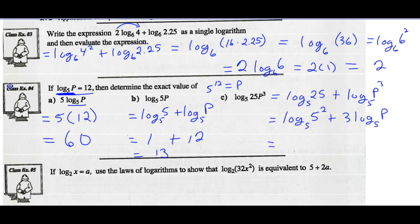And from previous work, I know the log of 5 squared base 5 is 2. And 3 times the log of P base 5. Again, the log of P base 5 is 12. So this is 3 times 12. So 2 add 36 gives us a value of 38.